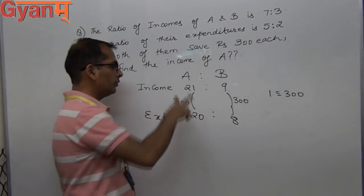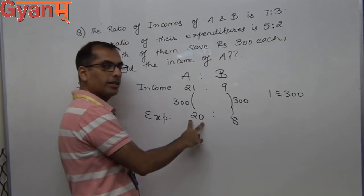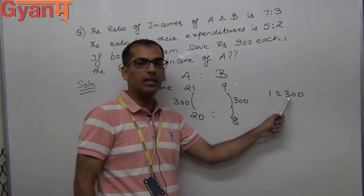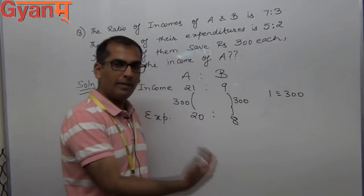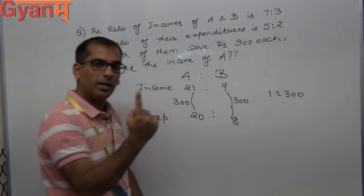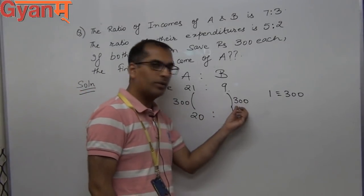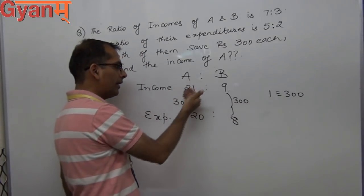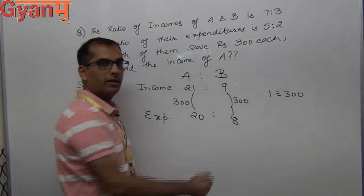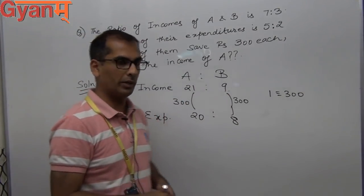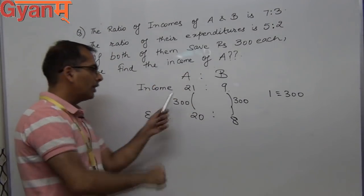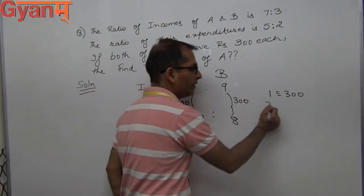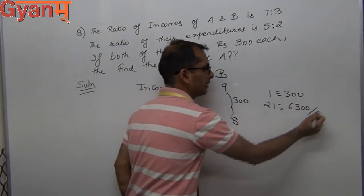Since A's income is 21 and expenditure is 20 in ratio terms, the saving is 1 part, which equals the actual saving of rupees 300. So 1 part equals 300. Similarly for B, 9 minus 8 equals 1 part, which also equals 300. Multiplying all ratio terms by 300, A's income is 21 × 300 = rupees 6300.